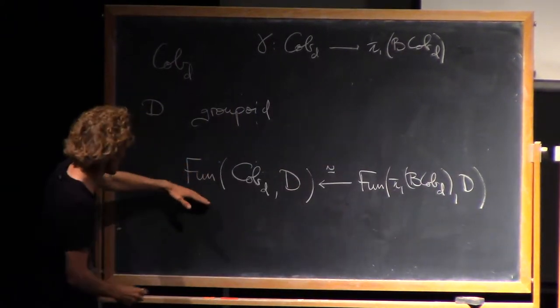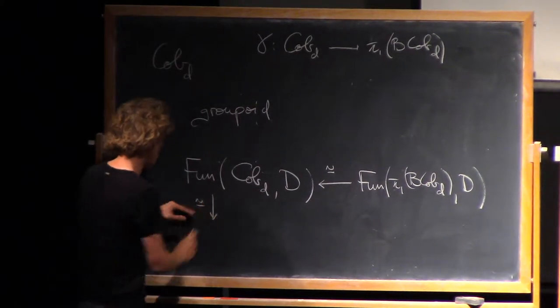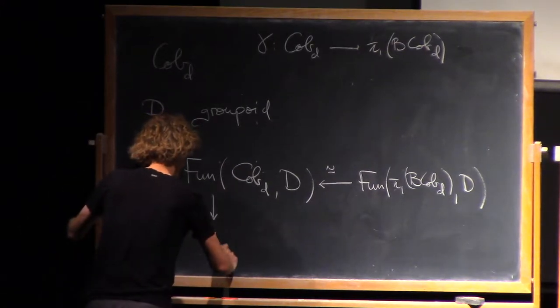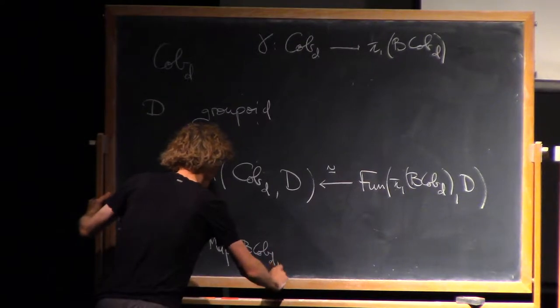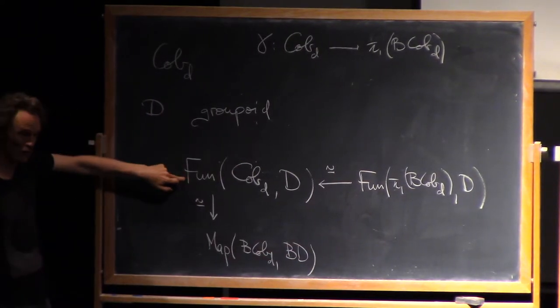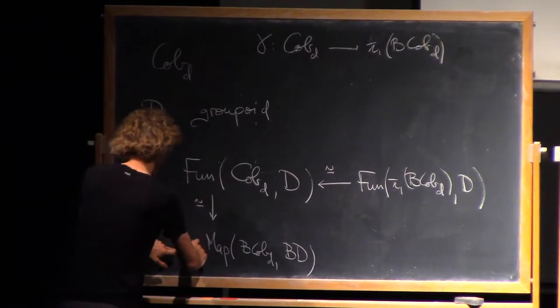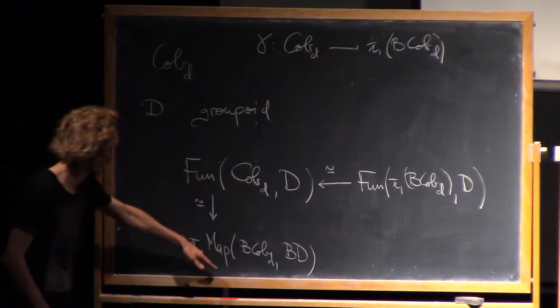Precomposition with that gives an equivalence of categories from functors out of pi1 b cobd into D. If I have a functor, I can take b of it and get a map from b cobd into bd. This gives an equivalence of category from the functor category to the fundamental groupoid of the mapping space. Natural transformation goes to a homotopy.